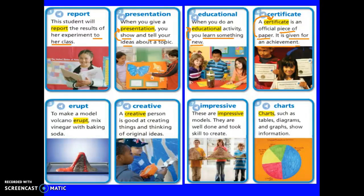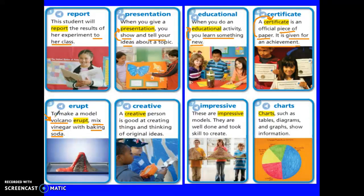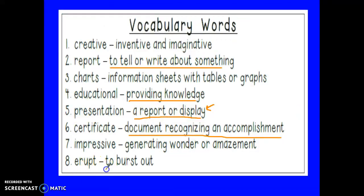'Erupt.' To make a model volcano erupt, mix vinegar with baking soda. This one doesn't have a whole lot of clues in the text — we have to rely on our background knowledge. If you've ever tried this experiment at home, or if you know about volcanoes, you know that mixing vinegar and baking soda causes a boiling liquid to come up out of the volcano. Similarly, when real volcanoes erupt, hot magma blows up out from the top. We use a lot of background knowledge to understand what 'erupt' means. The actual definition for 'erupt' is to burst out — like the baking soda and vinegar bursts out of your volcano model.